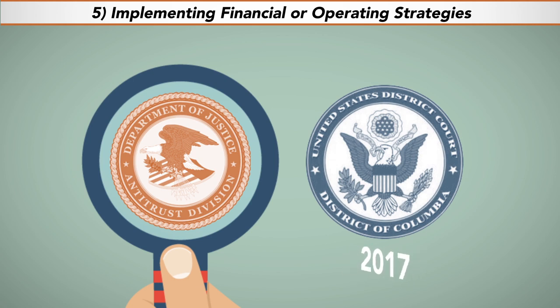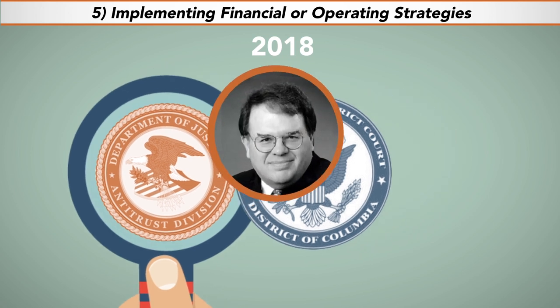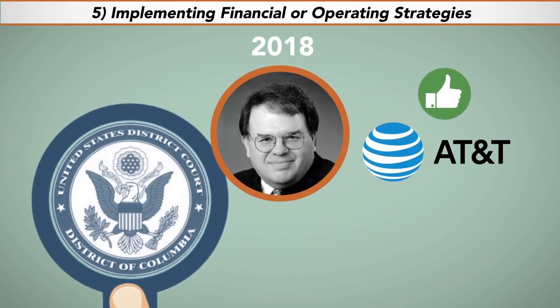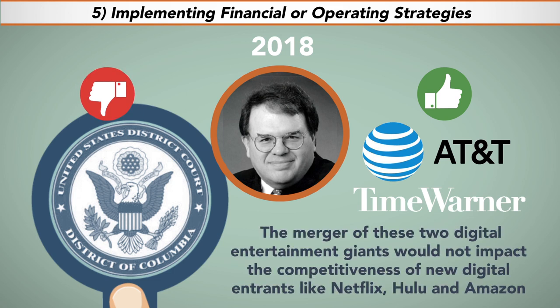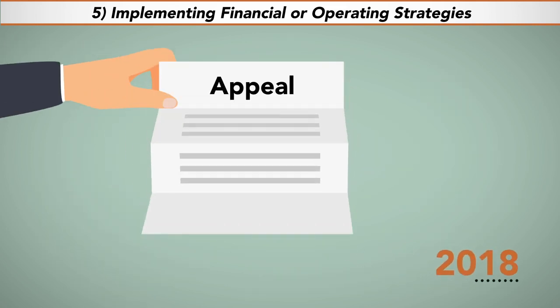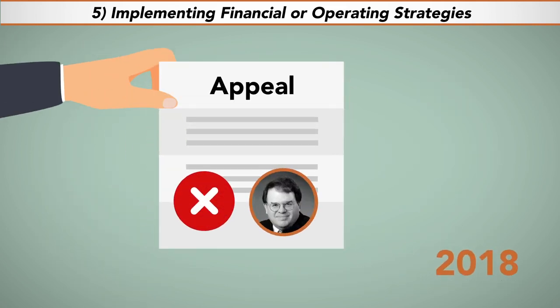After trial on June 12, 2018, Judge Leon issued his opinion finding in favor of the defendants AT&T and Time Warner and rejecting the government's argument to block the proposed merger. He found that the merger of these two digital entertainment giants would not impact the competitiveness of new digital entrants like Netflix, Hulu, and Amazon. In August 2018, the U.S. filed its appeal asking for relief from the incorrect decision of Judge Leon. The appeal is pending as of this writing.